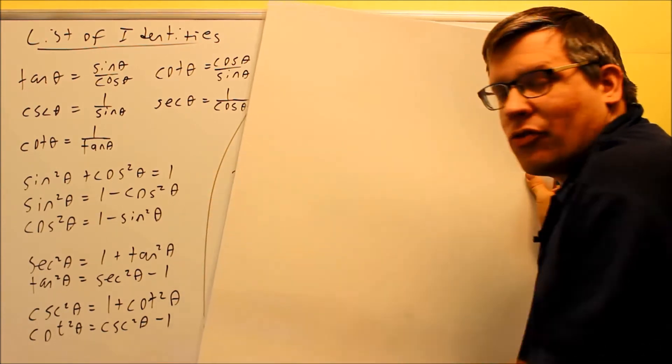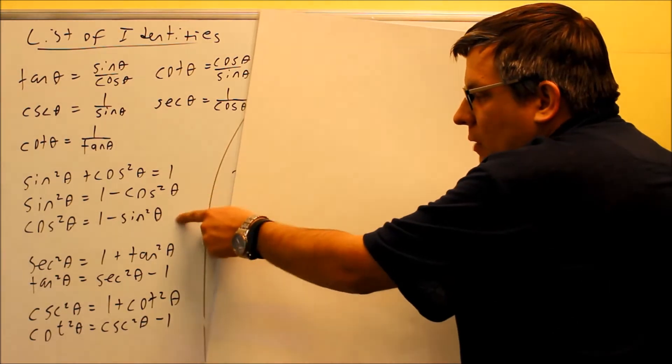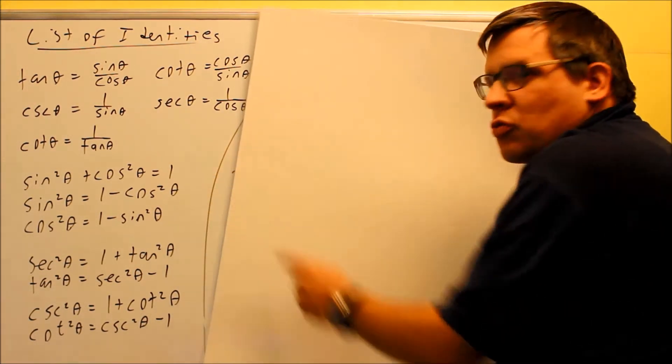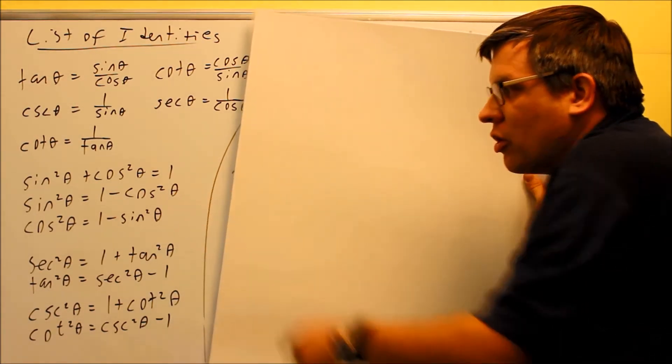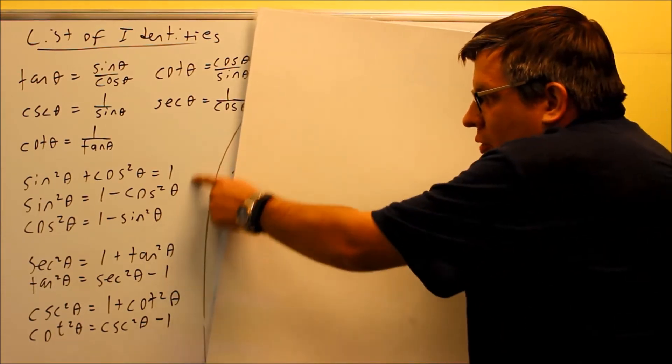Now, if you take that formula and you solve for either sine squared or cosine squared, we get two other identities that come from it. They're really the same exact thing as the first one there, it's just that we're solving for two different things, either sine squared or we're solving for cosine squared. So those are three identities.